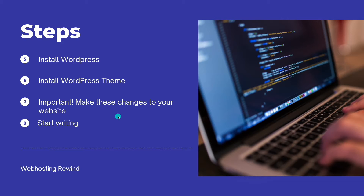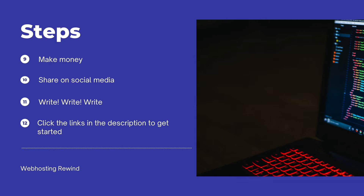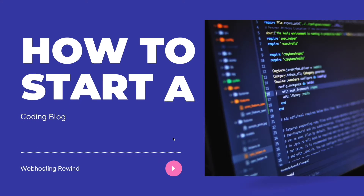I'm going to show you how to start writing. There's a simple five-step process that I use to start writing so we can get up and writing right away. I'm also going to show you different ways that you can make money from your blog, why you need to share it on social media, about how many blog posts you should write, and make sure you've clicked the links in the description. So let's go ahead and get started.